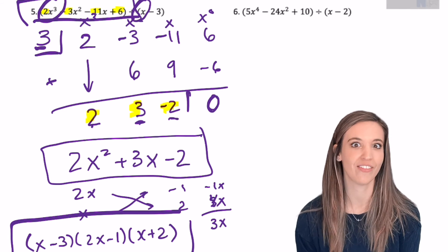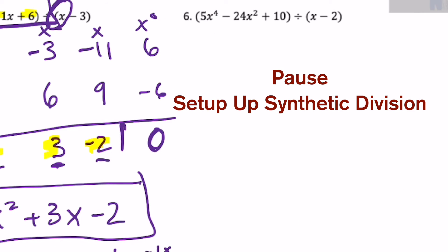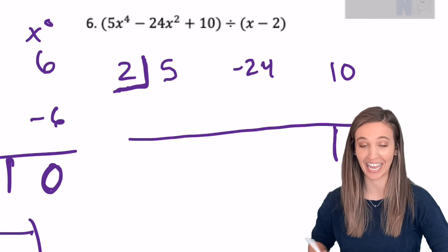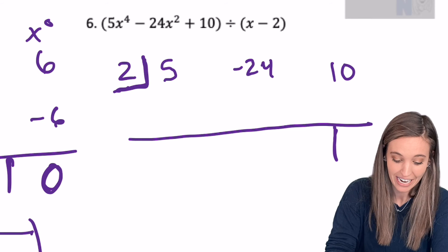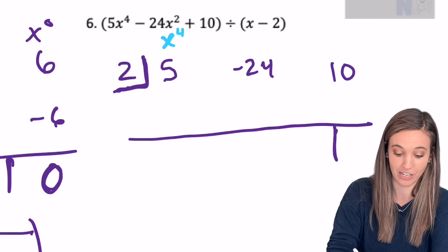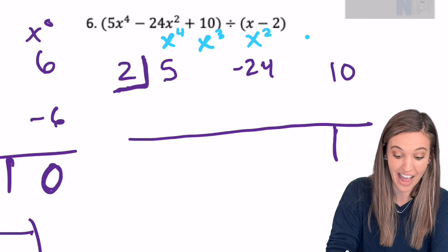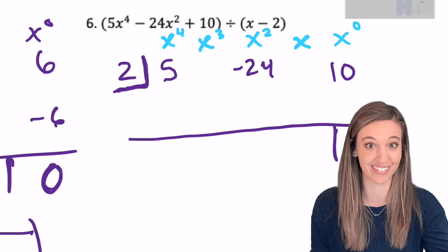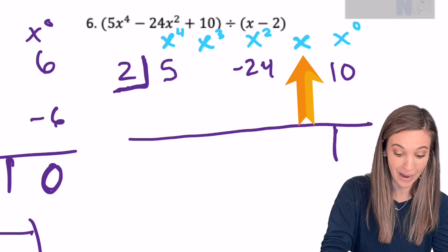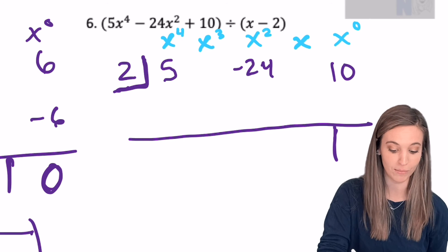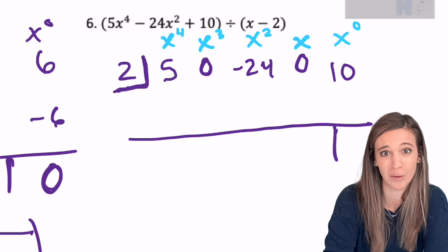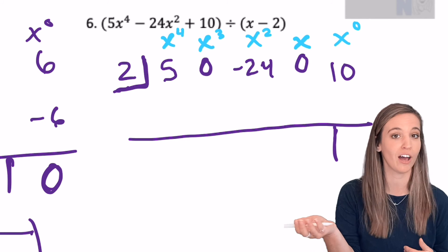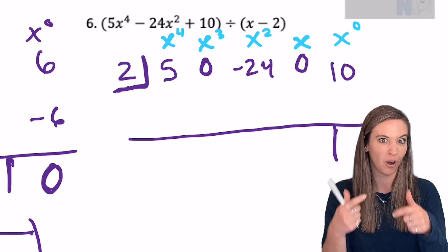Why don't you set example 6 up using synthetic division? Let's check your setup. That's a problem — we definitely can't have that happen. What did I forget? This is an x to the 4th power, so I need a place for x to the 4th, x to the 3rd, x squared, x, and x to the 0. I have a place for x to the 4th, x squared, and x to the 0, but I don't have x to the 3rd or x. Since I didn't have those terms, I need to put 0 placeholders in. That's one bummer about synthetic division — we can think we're doing it totally right and get an answer and be totally wrong because we forgot our zeros. In long division we can catch that because it's part of the process. Go ahead and finish it once you've put in those zeros.